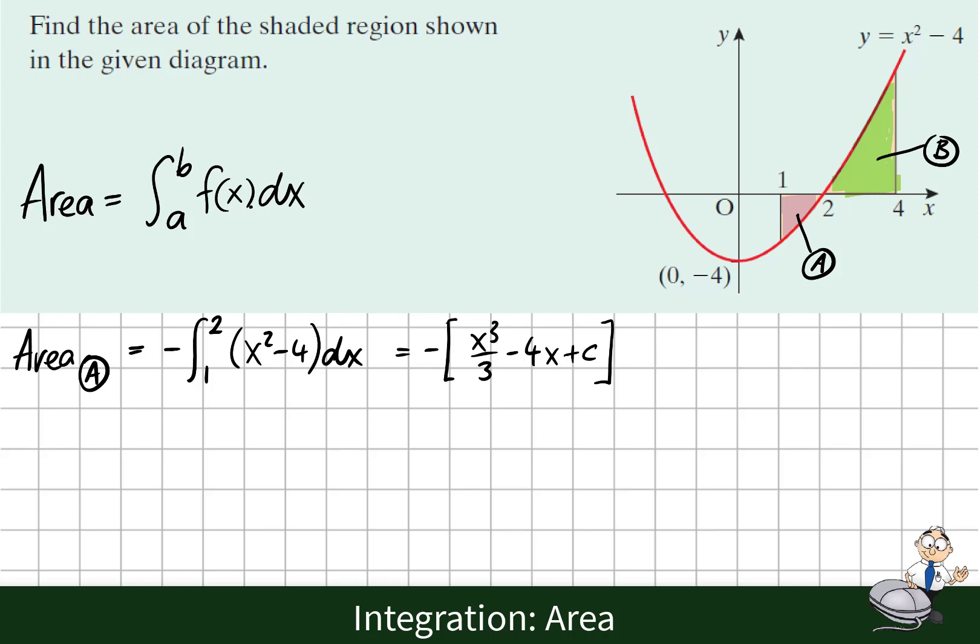So we get x³/3 - 4x + c with the limits 2 and 1. This means we're going to substitute in 2 into this function first and subtract the answer when we substitute in 1.